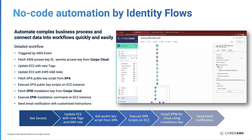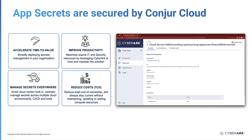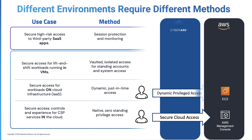Identity Flows provides a low-code visual editor with a drag-and-drop interface, as well as pre-built and custom connectors that allow you to connect with external applications. This enables organizations to easily customize workflows and align them with their business needs. Application secrets are required for the automation workflows to communicate with cloud service providers. Conjur Cloud from CyberArk Identity Security Platform is used to simplify the process of securing non-human identities for workflows. Once the email notification is sent, the user can securely access the cloud resource with dynamic, just-in-time access.